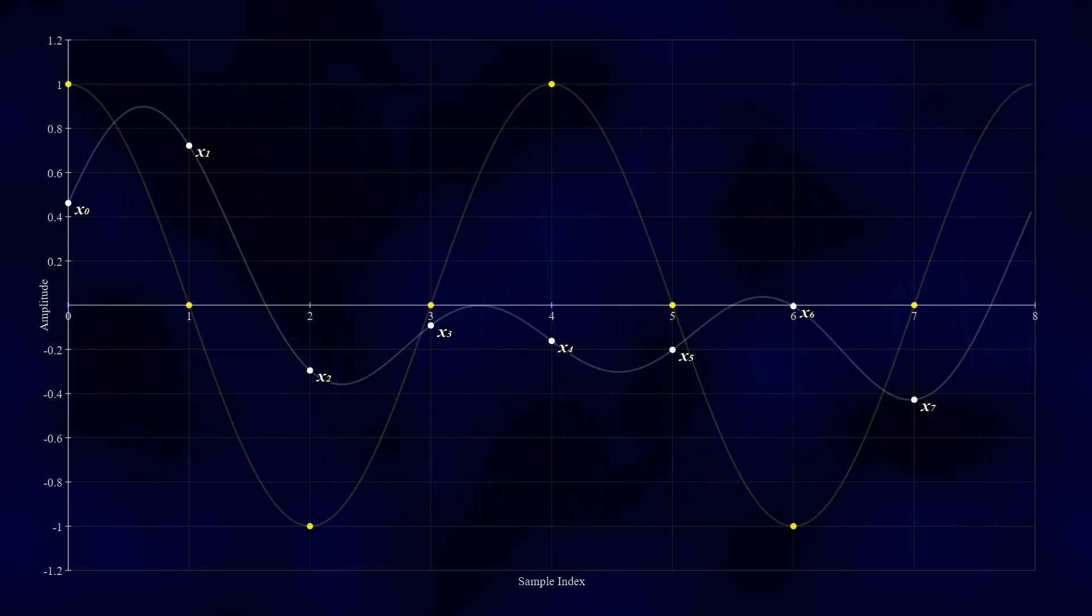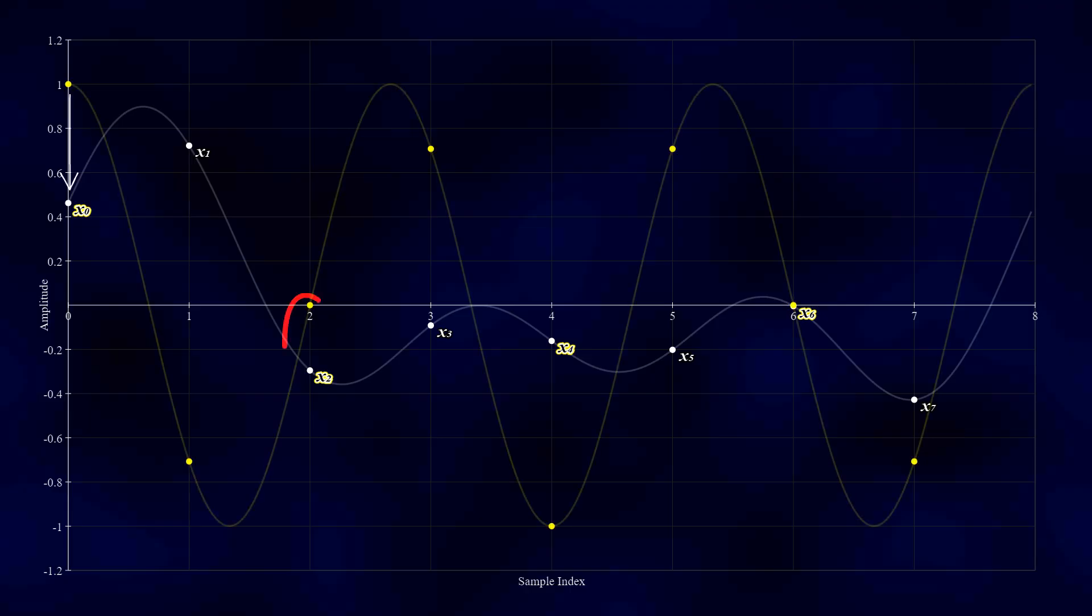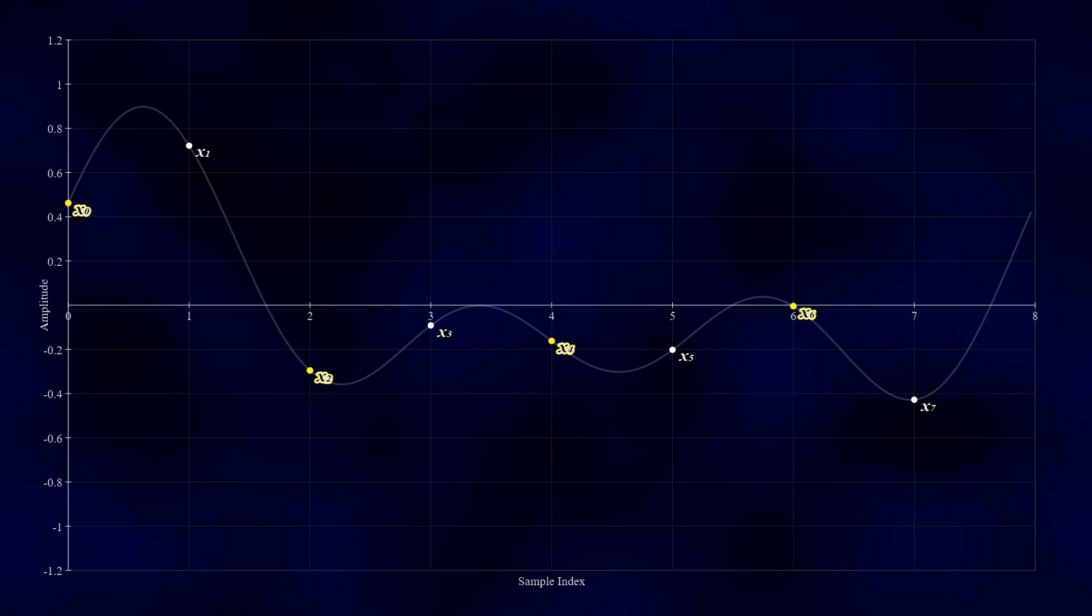Let's look at the cosine wave first. Notice that the samples in the signal that tend to align most strongly with the maxima and minima at each frequency are the even samples. While this isn't always perfectly true for every frequency, it is a general trend, and it's this tendency that the FFT exploits. As a result, the even samples contribute most strongly to the cosine component of the DFT.